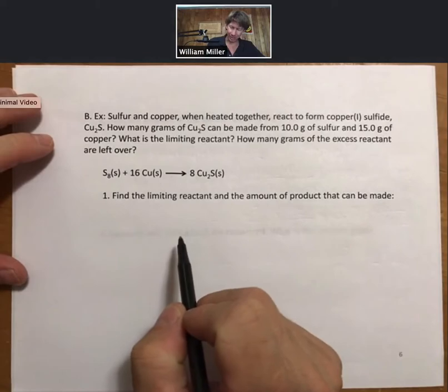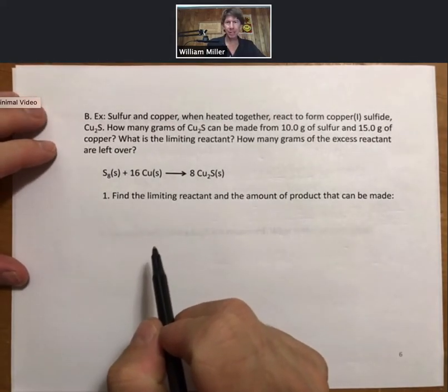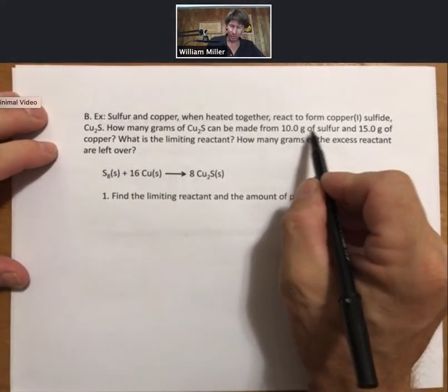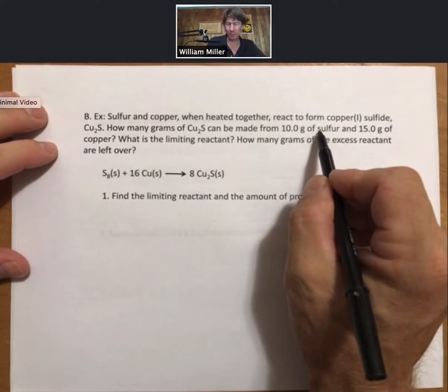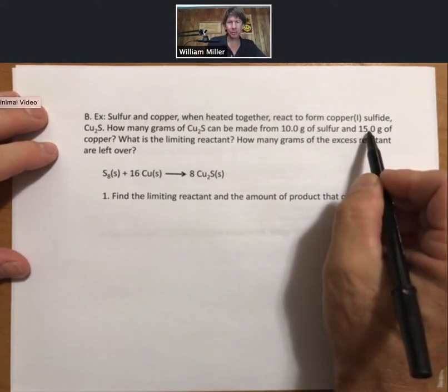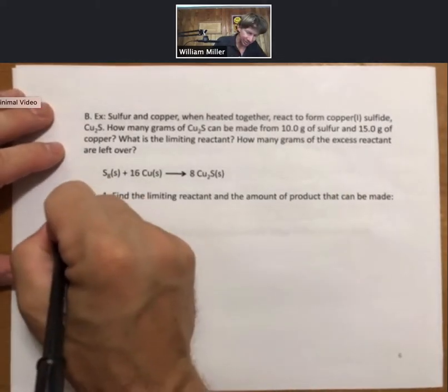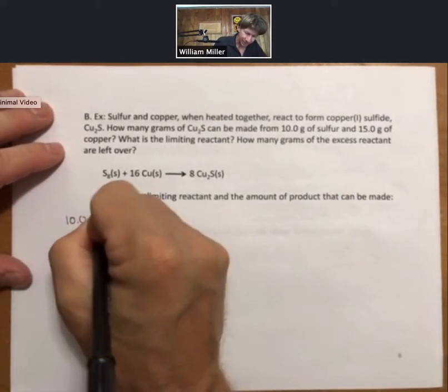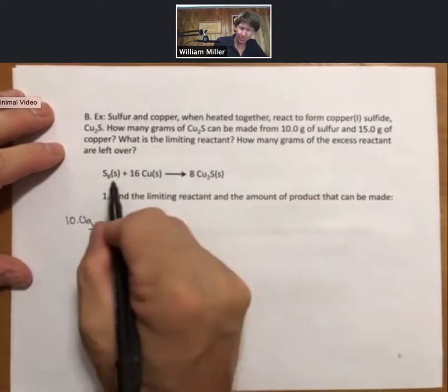Find the limiting reactant and the amount of product that can be made. Well start with your grams of sulfur, do stoichiometry, then start with your grams of copper and we'll see which one has the smallest amount. 10.0 grams of sulfur. And when it says sulfur, it means S8.